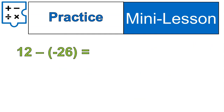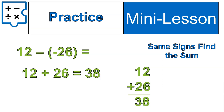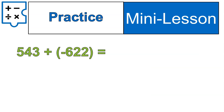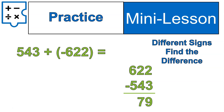Let's do another practice — write this one down and try it. Welcome back. This became 12 plus 26. No difficult rules here: same signs, find the sum. It's a positive plus a positive, giving you a positive — straightforward. That was a fairly easy practice question, just remembering that minus negative becomes a positive. Now let's look at this one: 543 plus negative 622. The signs are different, so I find the difference: 622 minus 543 leaves me with 79.